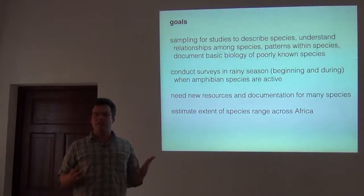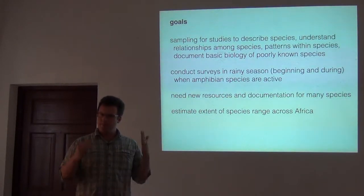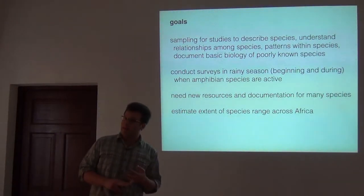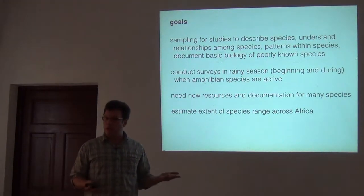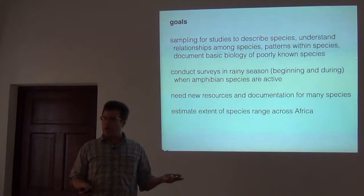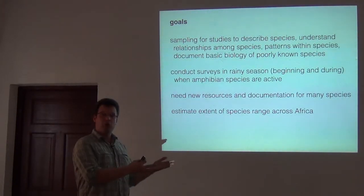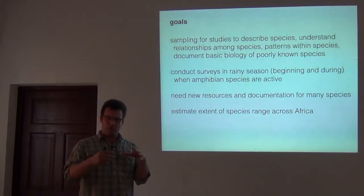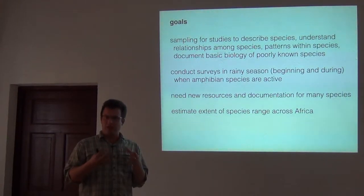For so many of these species, even the named ones, all we know is that they exist — they have a name, that's it. We don't know anything more about their biology: what type of tadpoles they have, how long they live, what they eat, what they look like in life. In many cases, we only know of them from dead museum specimens and have no idea what color they are. This basic documentation is really fundamental to understanding biodiversity.